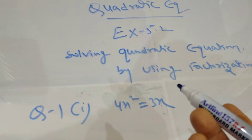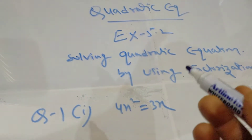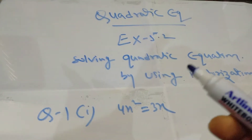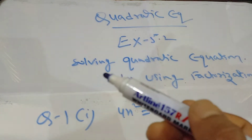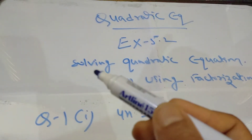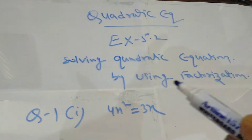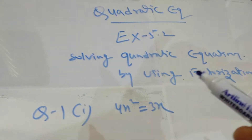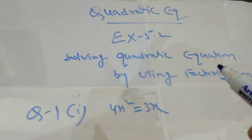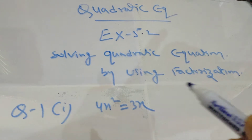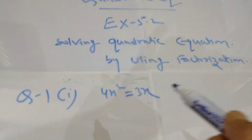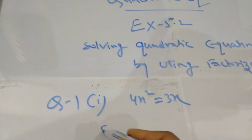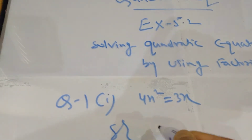Please learn it one by one and try to complete the exercise yourself, and get the hint from these videos. Today we are going to start the solution of quadratic equations, which we have done in class 9th also. We will continue this topic: solving quadratic equations by using factorization. The first question is 4x² = 3x.